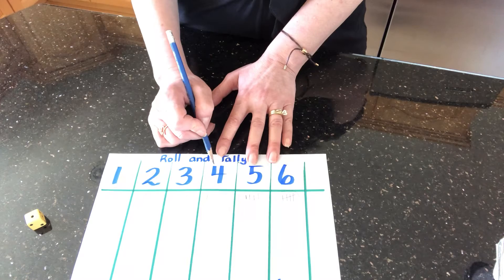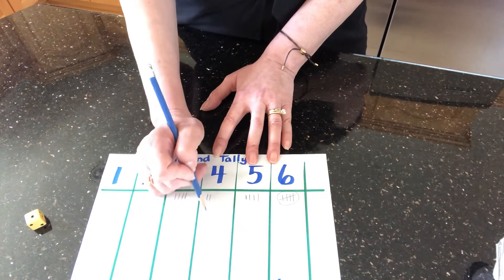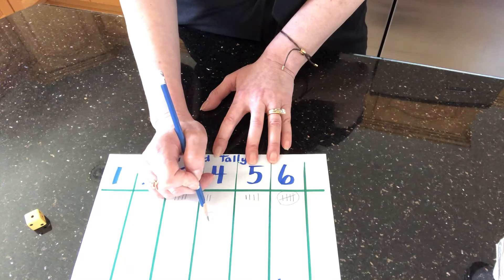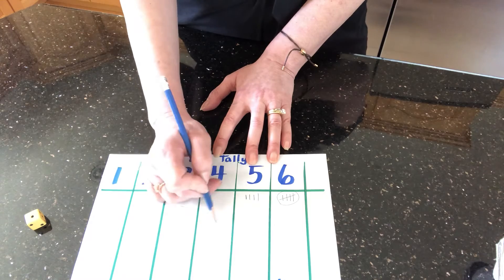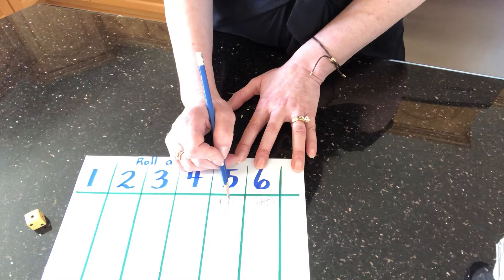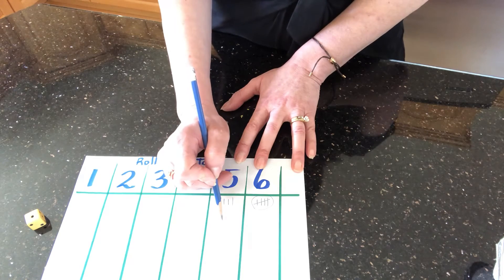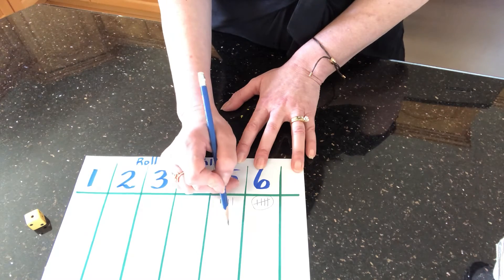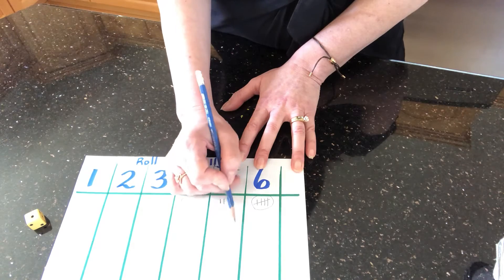How many did four get? You should see that. It's a two. Around and back on the railroad track. Five has one, two, three, four. Down and across and down once more. I'm going to circle that.